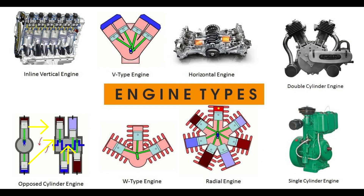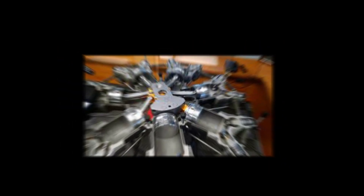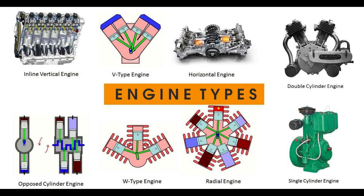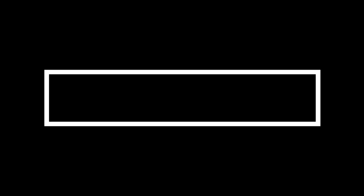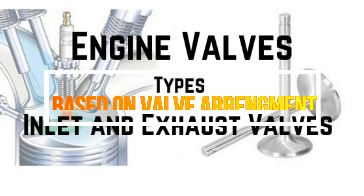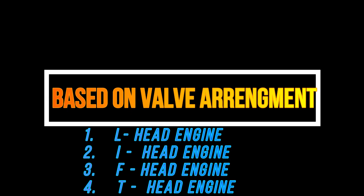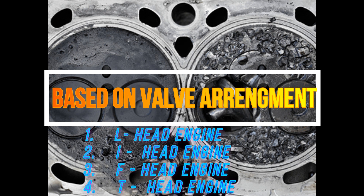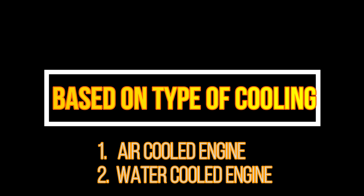Opposed cylinder engines have cylinders directly opposite each other. Radial engines have a round shape — cylinders arranged in a radial pattern. Valve arrangement types include L-type, I-type, F-type, and T-type. Cooling types: air cooled and water cooled engines.